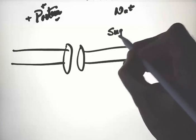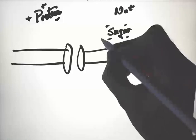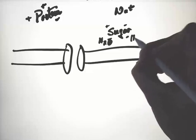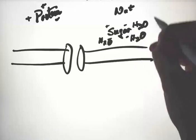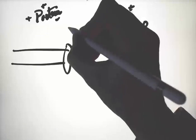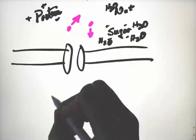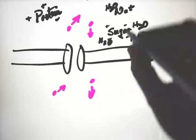Or ions, or sugar, which has areas that are slightly positive or negative. Any of those will attract water molecules. And the important piece is how many water molecules are free to move.